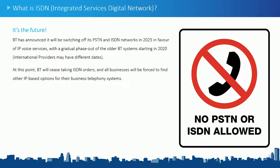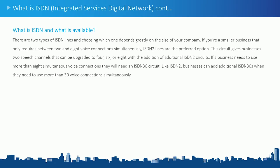BT have announced they'll be switching off the PSTN and ISDN in 2025. That date may change, but they'll be gradually fading out all the older BT systems starting in 2020. If you are an international customer, the dates may differ — refer to your provider. BT will cease taking ISDN orders very soon and you'll have to opt for an IP-based business telephone system.